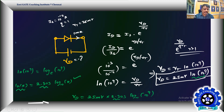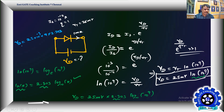So Vd can be calculated as 25 × 10^−3 × 2.303 × 9, since log₁₀(10^9) = 9. So 9 × 2.303 is the multiplier. What we need is 9 × 25 = 225. So Vd = 225 × 2.3 millivolts, roughly.